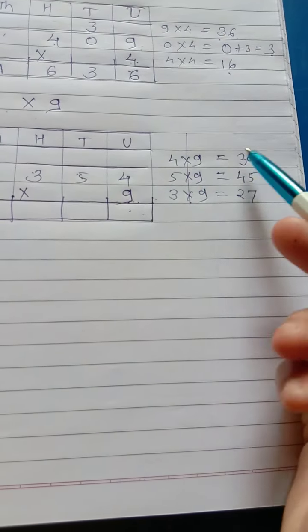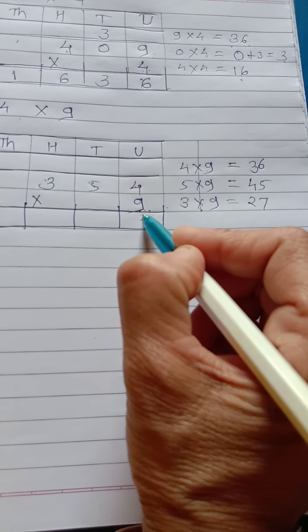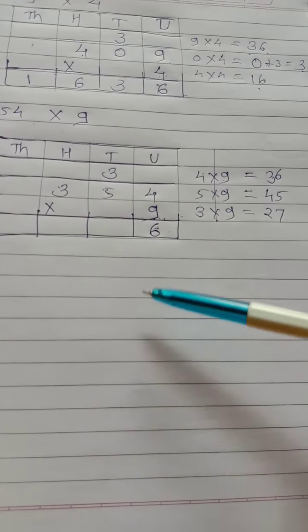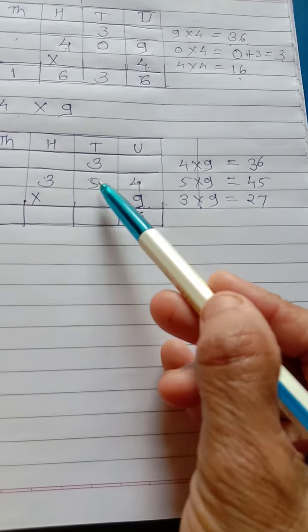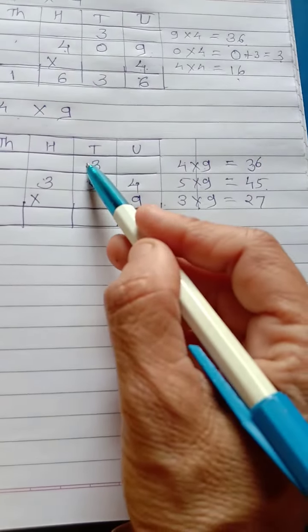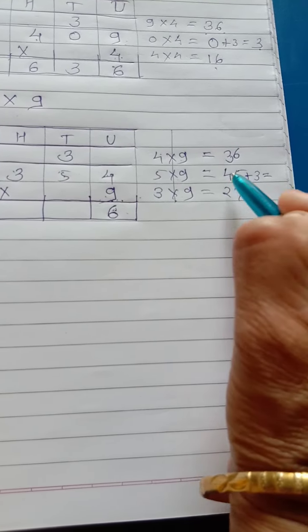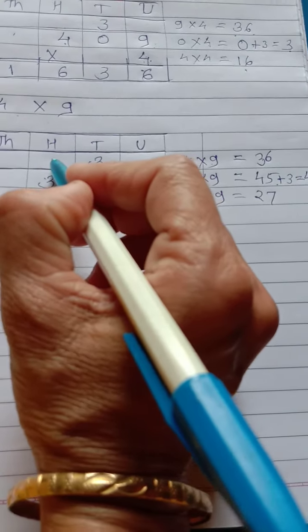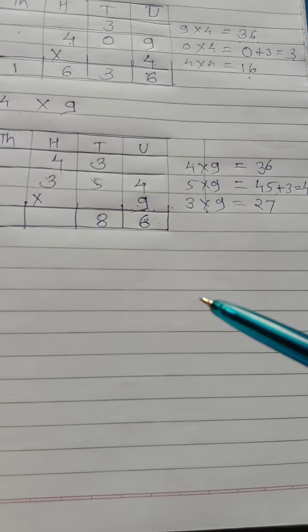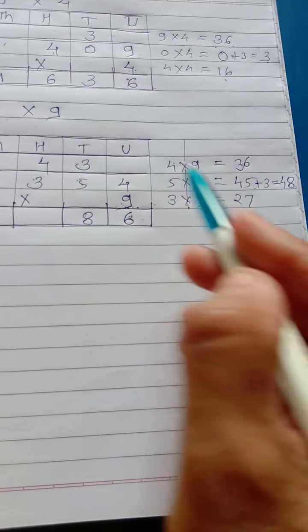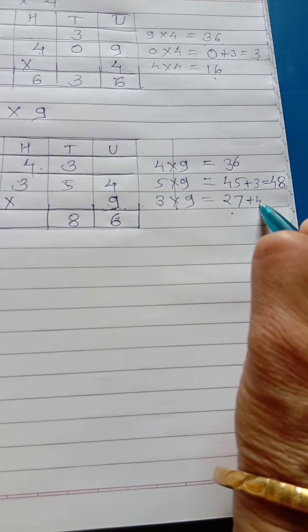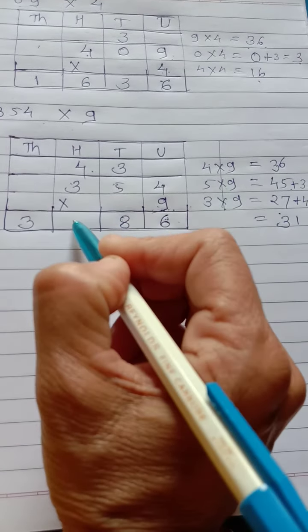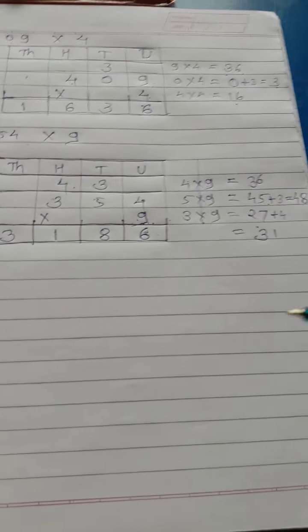Now, start from here. 9 multiply by 4. 9, 4's are 36. Out of 36. 3, 10, 6 units. Write 6 here on a unit place. And, 3 on in the carried over 10th place. Again, 9, 5 multiply by 9. That is 45. 45 plus 3. 45 plus 3. That is 48. So, you must write 8 here. And, 4 on in the carried over 100th place. 9, 3's are 27. 27 plus 4. 27 plus 4. That is, what? 31. Answer is 31. Understand? Easy here.